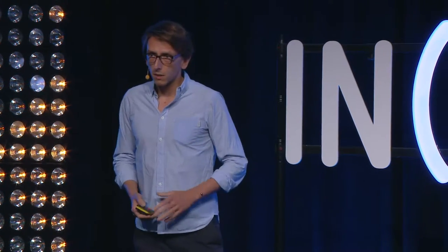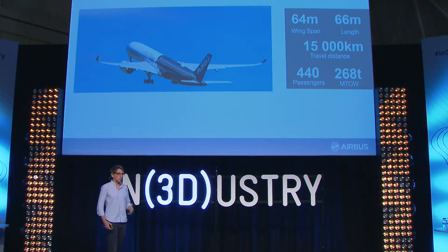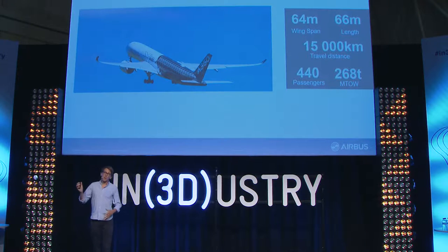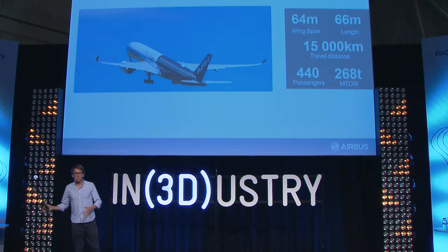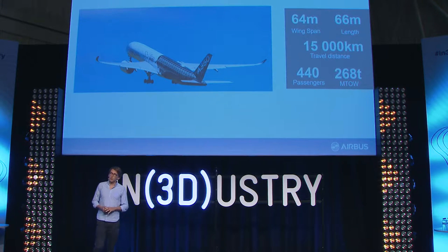The first part of my presentation is about explaining the complexity of these sublime products. What's behind an aircraft? How do we make it? The A350 — you met it earlier today. It's an aircraft capable of flying 15,000 kilometers, carrying 440 people at very high altitude, taking off at a weight of 268 tons. The size of the beast: 64 meters wide tip to tip, and 66 meters long.